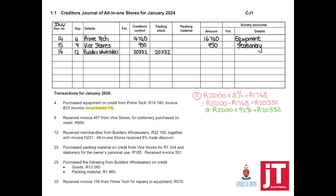On day 20: purchase packing material on credit from Vice Stores for $1,344 and stationery for the owner's personal use, $185. Received invoice 501, renumbered as number 17. We purchased two different items from the same supplier. Stationery for the owner's personal use is a personal expense and must be shown as drawings. Adding those two together gives us the total amount we owe our supplier.